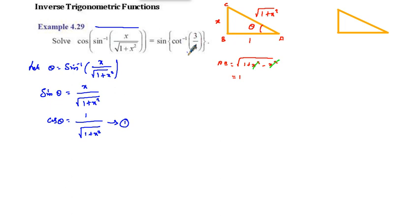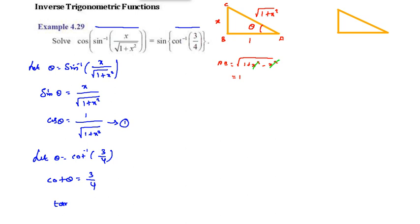Now for the right-hand side, let theta equal cot inverse of 3 by 4. Then cot theta equals 3 by 4, so tan theta equals 4 by 3. Using a right triangle with tan theta equal to opposite over adjacent, opposite is 4 and adjacent is 3. The hypotenuse equals square root of 4 squared plus 3 squared, which is square root of 16 plus 9, equals square root of 25, equals 5.